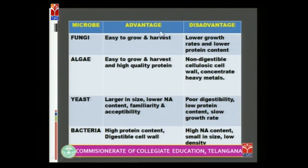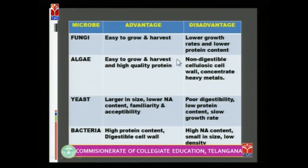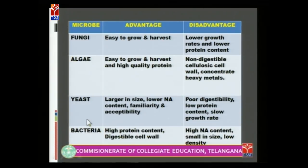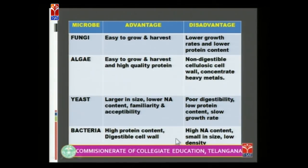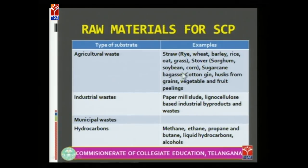Let us see the advantages and disadvantages of each organism used as SCP. Fungi are relatively easy to grow and harvest, but growth rate is slow and protein content is low. Algae are easy to grow and harvest and quality of protein is good, but cellulose — which is not digestible — is present and heavy metal concentration is also a concern. Yeast is larger in size with less nucleic acid content, and has familiarity and acceptability, but digestibility and protein content are lower. Bacteria have high protein content and a digestible cell wall, but the nucleic acid content is high and harvesting is difficult.